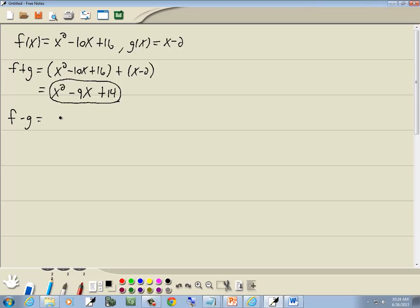Now let's find f minus g. We'll put parentheses around each function with a minus between them. My first set of parentheses isn't doing anything, so I can drop it. So I have x squared minus 10x plus 16. Remember, if you have a negative out in front of your parentheses, it flips the sign of everything inside. So the x becomes negative x, and the negative 2 becomes positive 2. So we get x squared, negative 10x and negative x gives us negative 11x, and 16 plus 2 is 18.